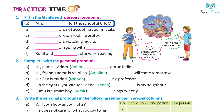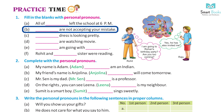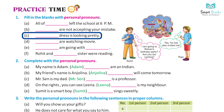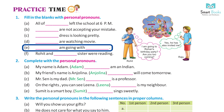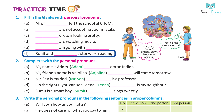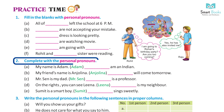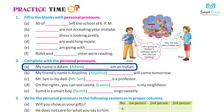Practice time — fill in the blanks with personal pronouns. A: All of us left the school at 6 p.m. B: They are not accepting your mistake. C: Her dress is looking pretty. D: They are watching a movie. E: I am going with him. F: Rohit and her sister were reading.